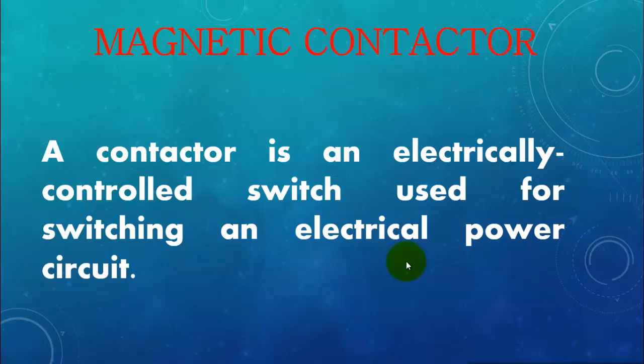Whenever you have to switch on or switch off any electrical machine, you need a magnetic contactor. Unlike a circuit breaker, magnetic contactor does not protect the circuit from overload. It is only used to switch on the electrical power circuit.